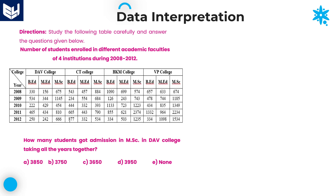Let's move on to the next question. How many students got admission in MSC in DAV college taking all the years together? We need to calculate the total number of students who got admission in MSC in DAV college across all years. We are calculating the total number of students; add all these values to get the answer.